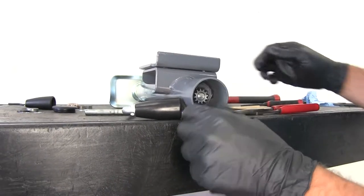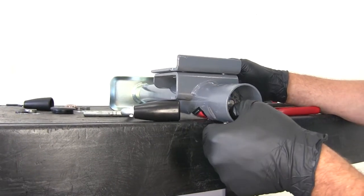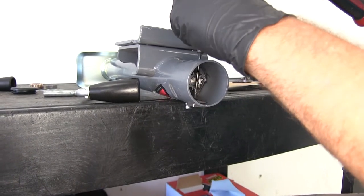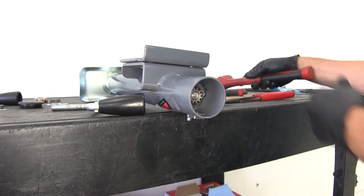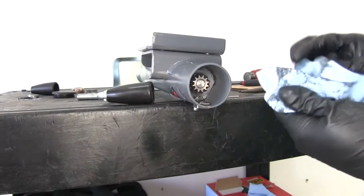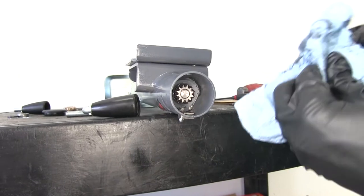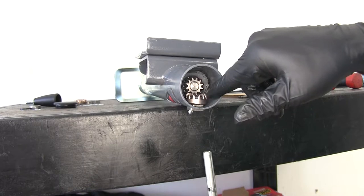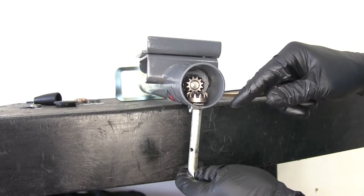Flanged bushing will go back in. It might offer a little resistance, but nothing too crazy. Then we'll take our other gear, and again, these are universal. So it doesn't matter which one you use for which spot. We're going to place that in so that the gears line up. They're going to mesh together.